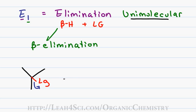The reaction begins when the leaving group breaks away from the parent chain, dissolving somewhere in solution and leaving a positive charge on the parent chain. The carbon that held the leaving group and now has a positive charge is considered the alpha or first carbon, and any carbon directly attached to the alpha carbon is considered the beta carbon.